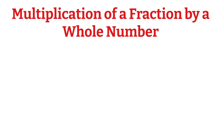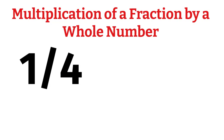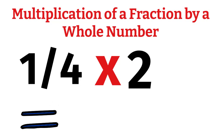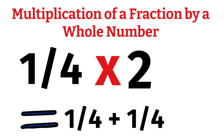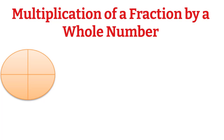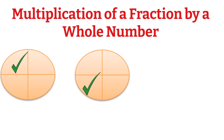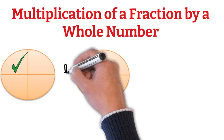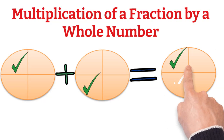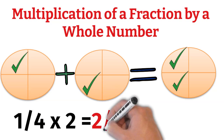Let's understand it pictorially through an example. Suppose we have to multiply fraction 1/4 by a whole number 2, that is 1/4 × 2, which is equal to 1/4 + 1/4. Here is an image of a circle and it has been divided into 4 equal parts. Thus, 1 part out of 4 parts constitutes 1/4. Now we will take another similar circle and show 1/4 on it in the same way. Thus, by totalling, there will be total 2 parts out of 4 parts, shown pictorially like this. Thus, 1/4 × 2 = 2/4.